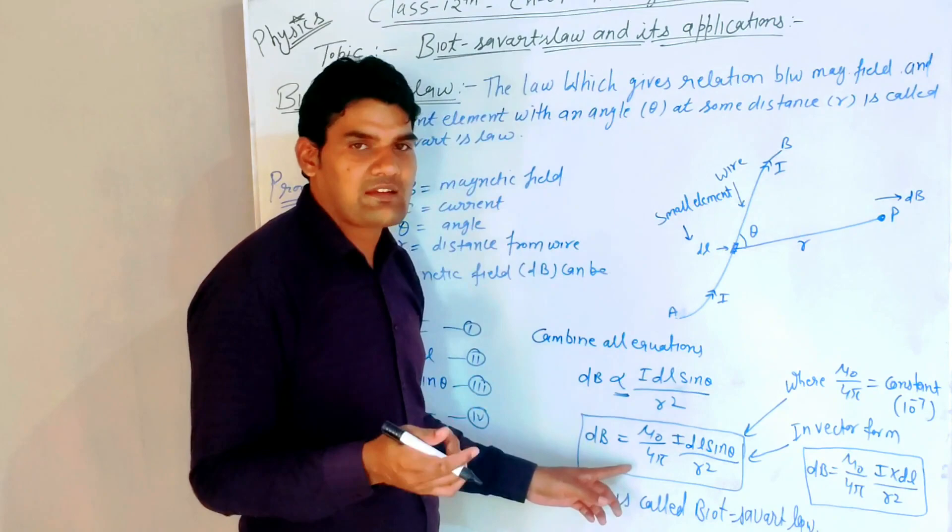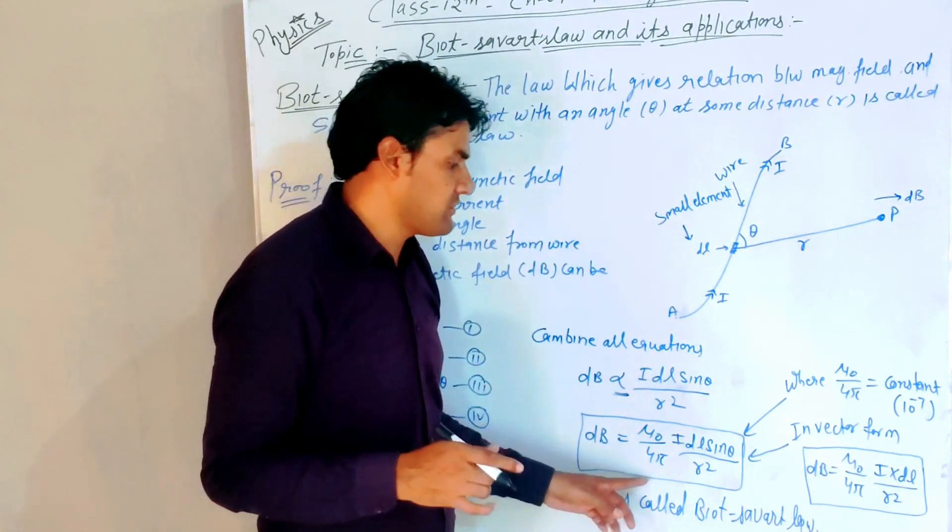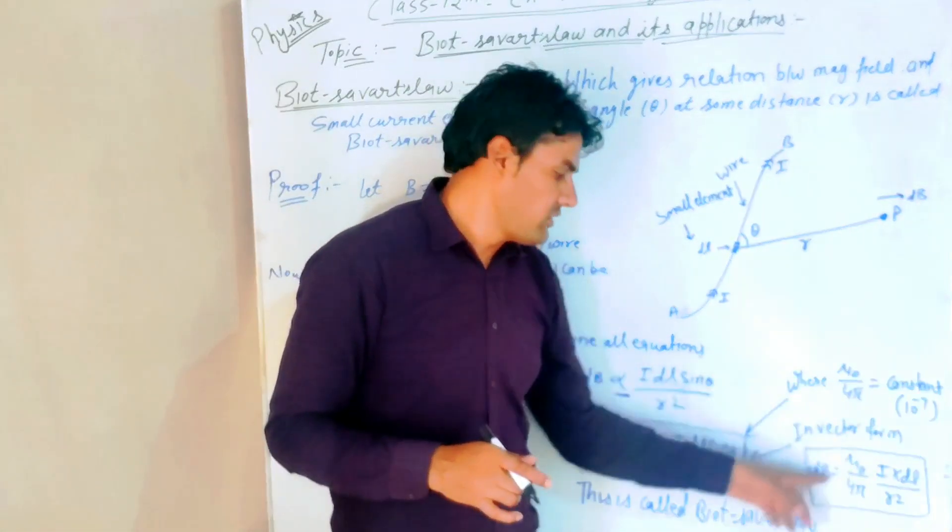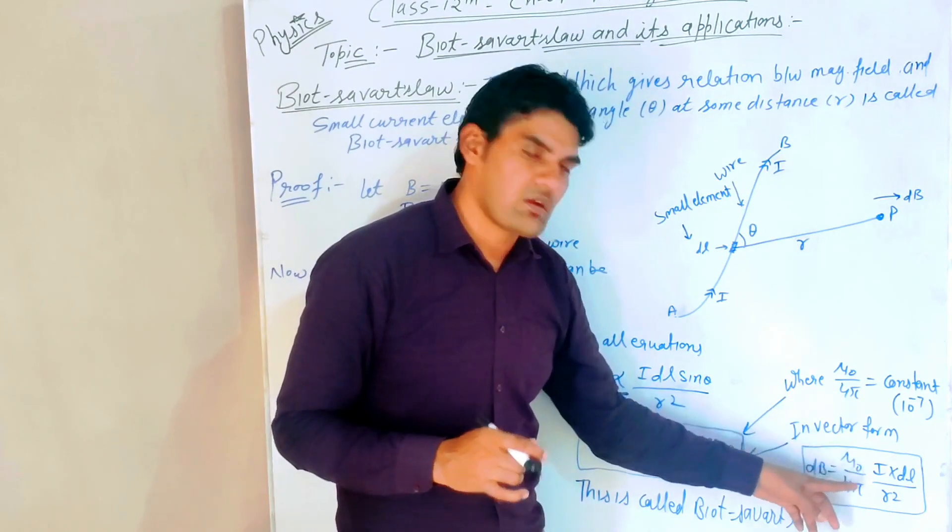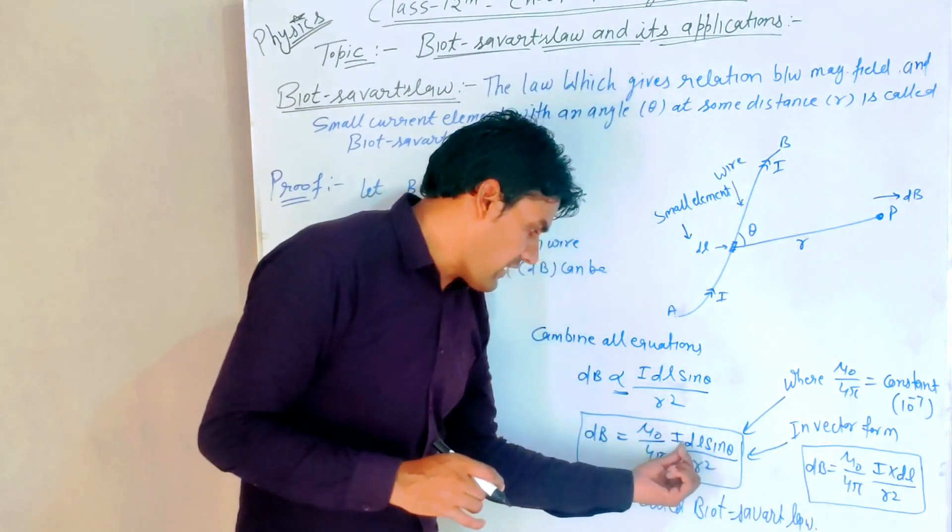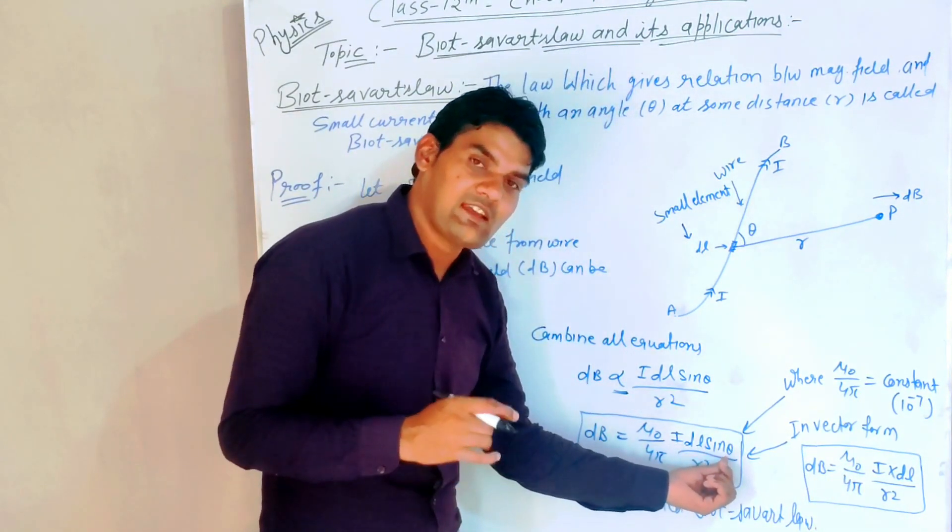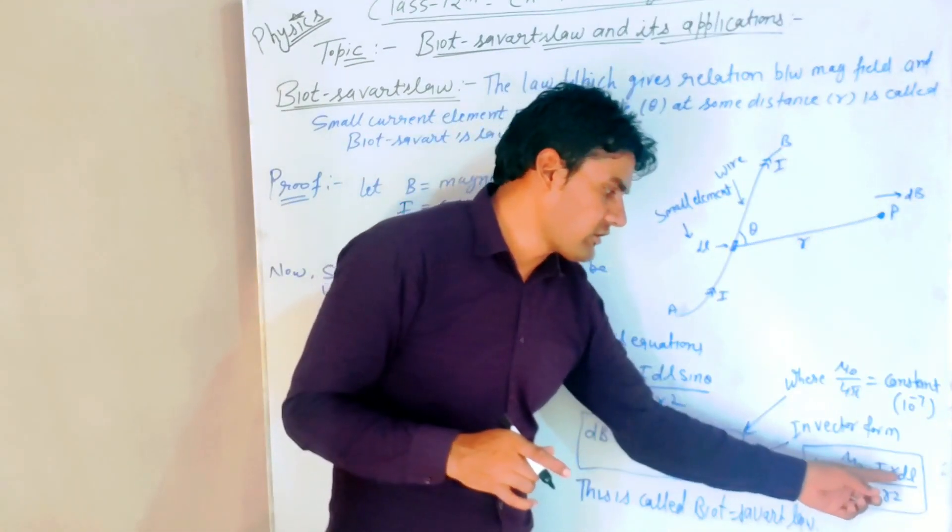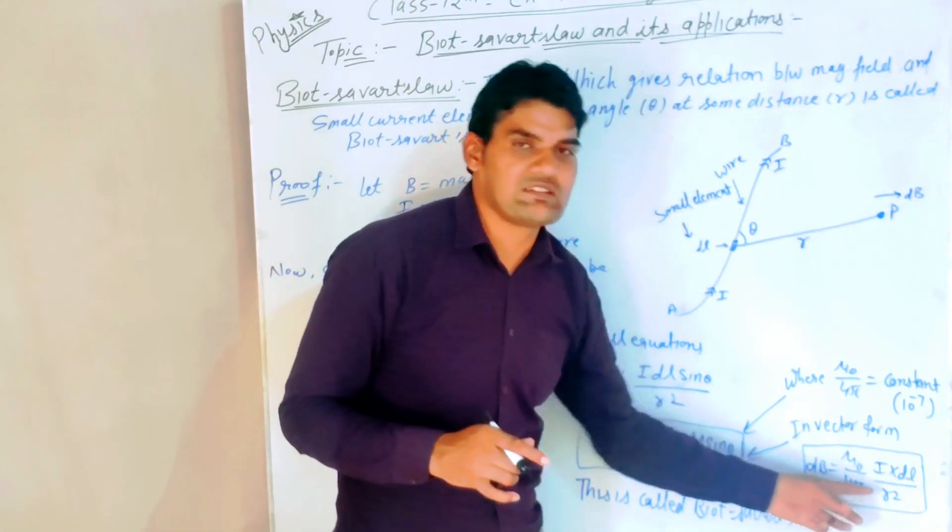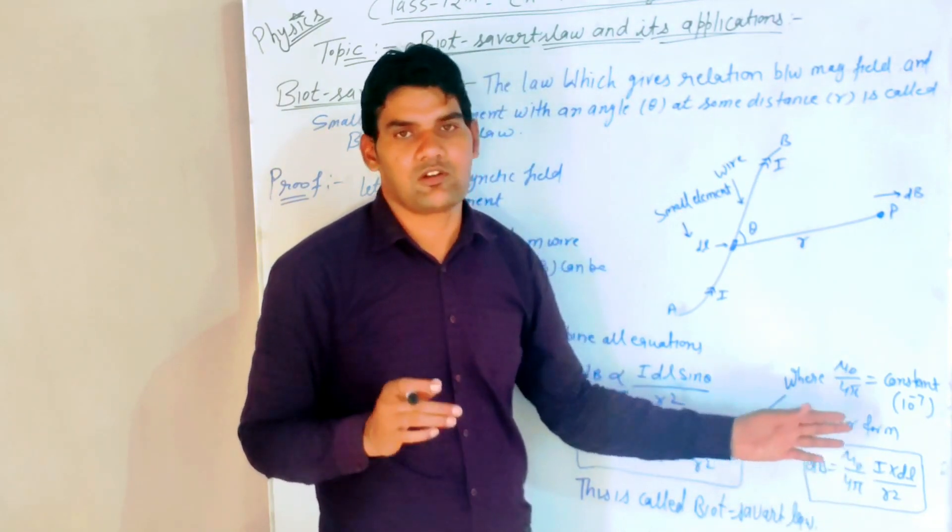To write the Biot-Savart law in vector form: dB equals mu naught upon 4 pi, times I dL sin theta upon R squared. Sin theta indicates a cross product, so it's I cross dL upon R squared. This is the vector form of the Biot-Savart law.